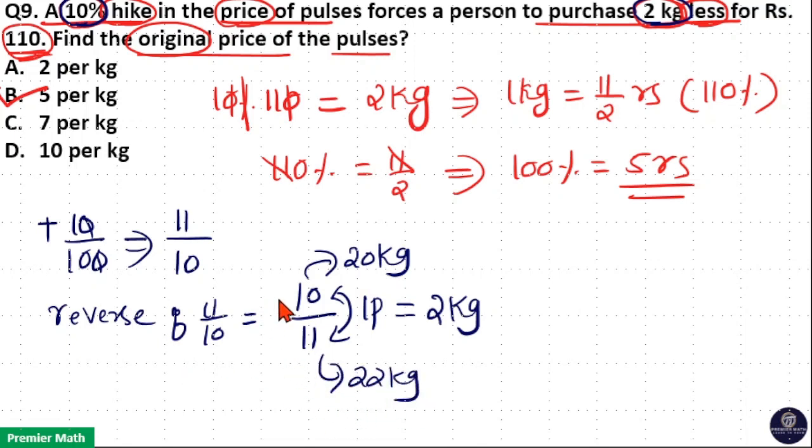Now here we need to find out the original price. Here denominator is the original one. So 22 kg cost 110 rupees means 11 goes 2 times in 22. So 2 kg cost 10 rupees means 1 kg cost 5 rupees. So option B is your answer.